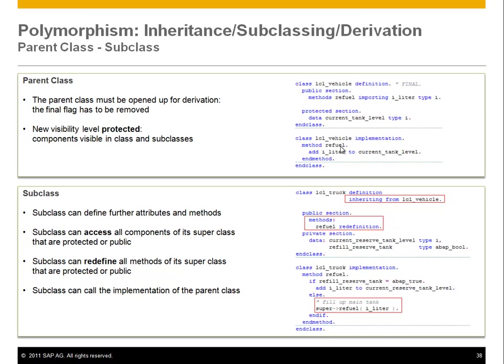So what are the key logical points? Subclasses can define further attributes and methods — you can add things. You can access all components of the superclass that are protected or public, and you can redefine methods of the superclass that are protected or public. Redefining means you change the implementation. Subclasses can also call the implementation of the parent class methods using the super variable.